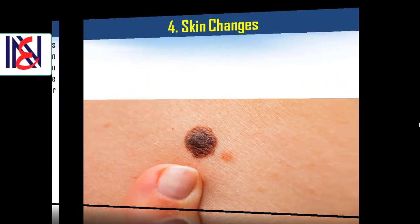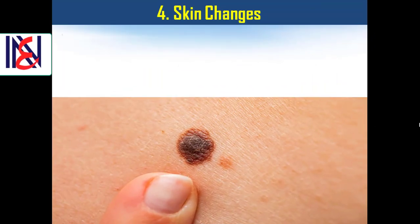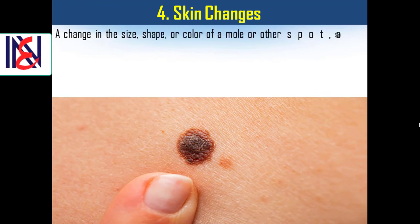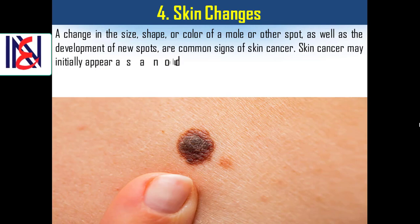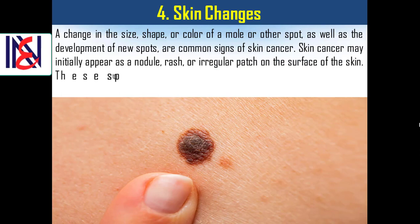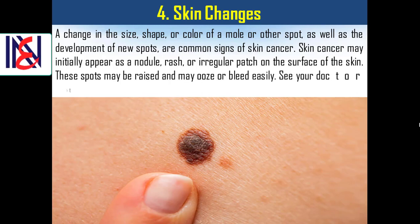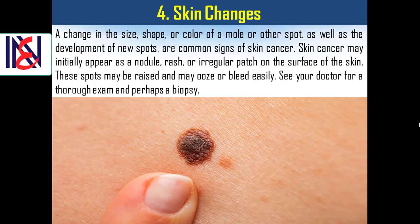4. Skin changes. A change in the size, shape, or color of a mole or other spot, as well as the development of new spots, are common signs of skin cancer. Skin cancer may initially appear as a nodule, rash, or irregular patch on the surface of the skin. These spots may be raised and may ooze or bleed easily. See your doctor for a thorough exam and perhaps a biopsy.